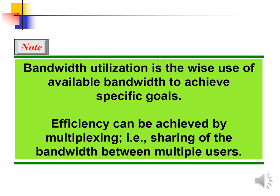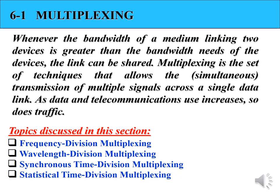Bandwidth utilization is a wise use of available bandwidth to achieve specific goals. Efficiency can be achieved by multiplexing, that is sharing of the bandwidth between multiple users. In the case of multiplexing, we can use frequency division multiplexing, wavelength division multiplexing, synchronous time division multiplexing, or statistical time division multiplexing to perform the multiplexing process.